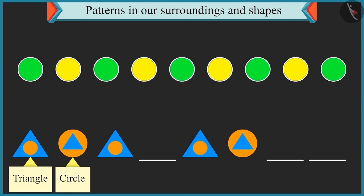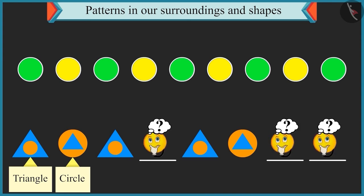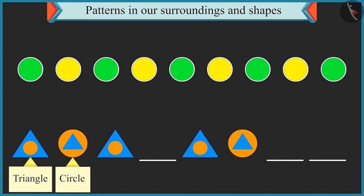Now tell me, which shapes would come at the empty places? Hmm. So now a small triangle inside a circle would come here in the empty place. Well done.